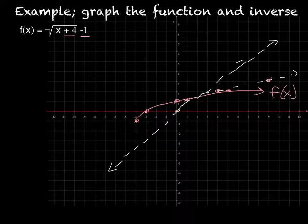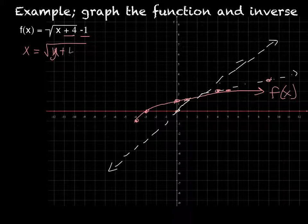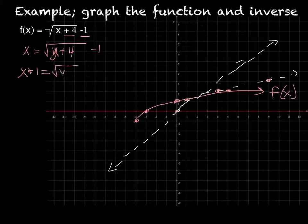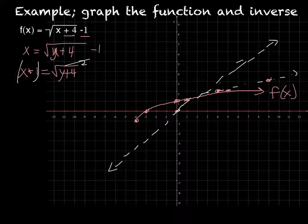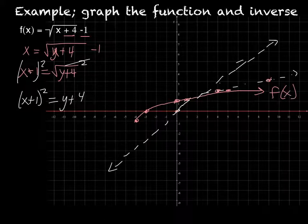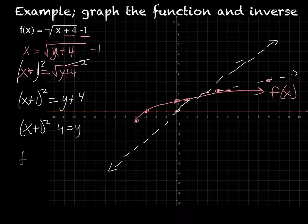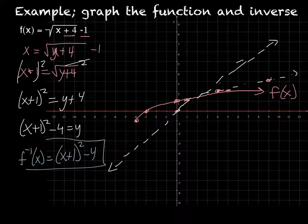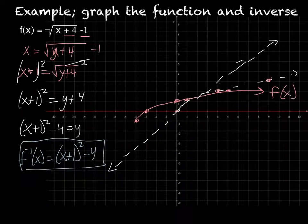Sometimes that's a little harder to do, so if I were to find the inverse function, I'm going to replace x: x equals the square root of y plus 4 minus 1. Add the 1 over: x plus 1 equals the square root of y plus 4. Then I need to square both sides, so I have x plus 1 squared equals y plus 4. Subtract the 4: x plus 1 squared minus 4 equals y. So my f inverse of x is x plus 1 squared minus 4, which is a quadratic — a parabola.